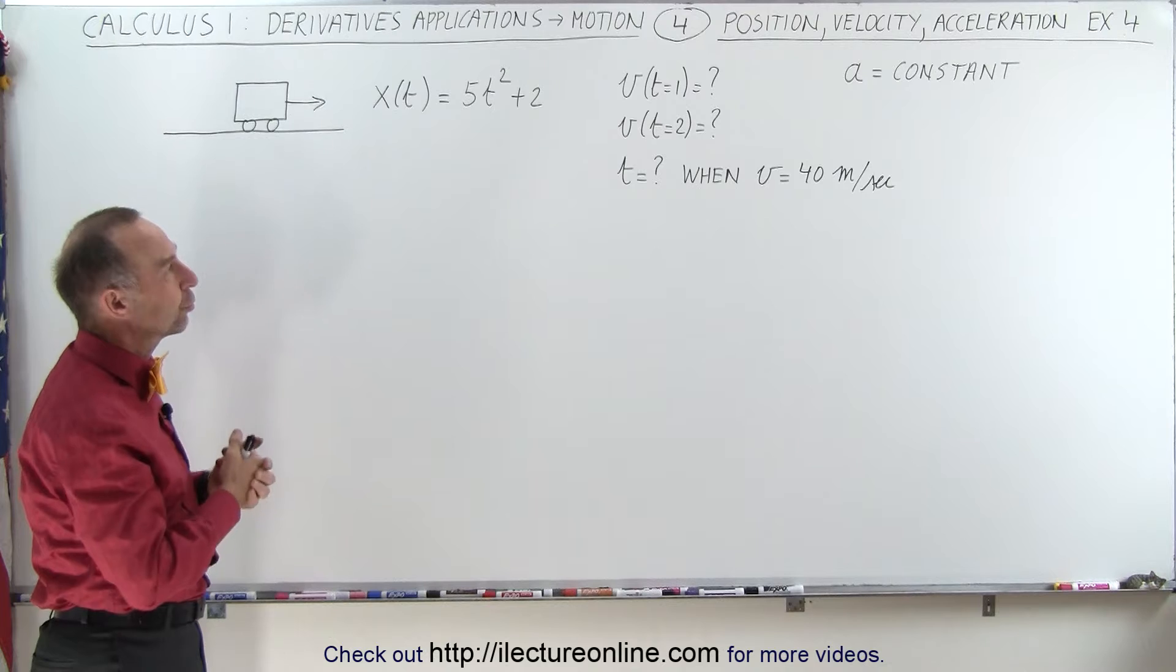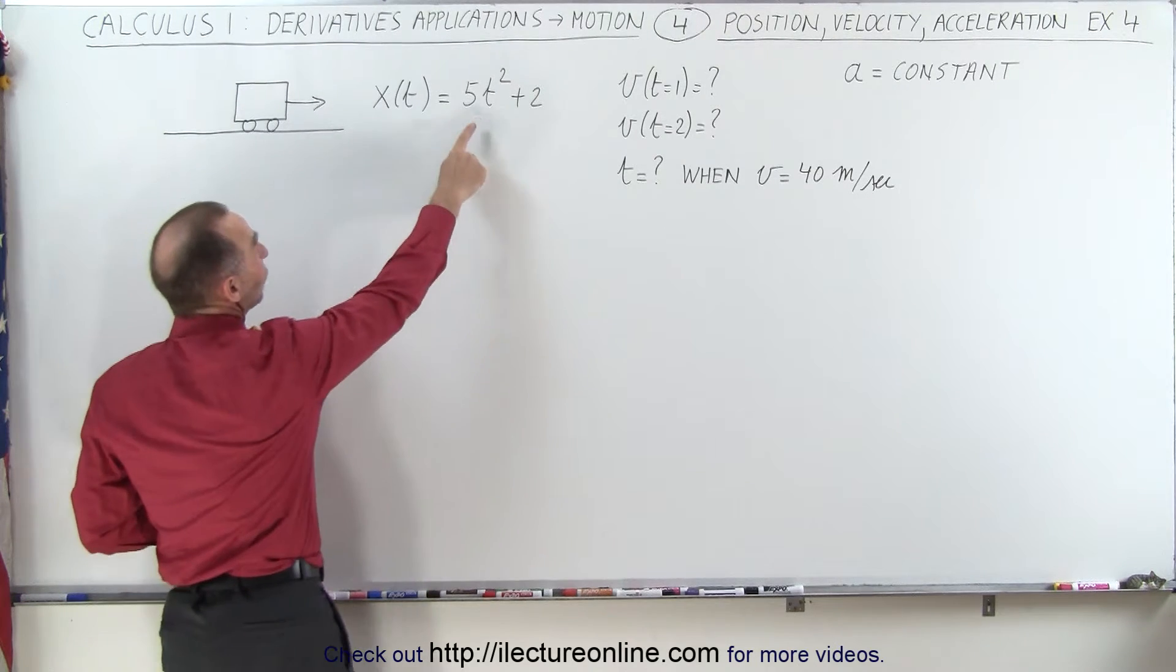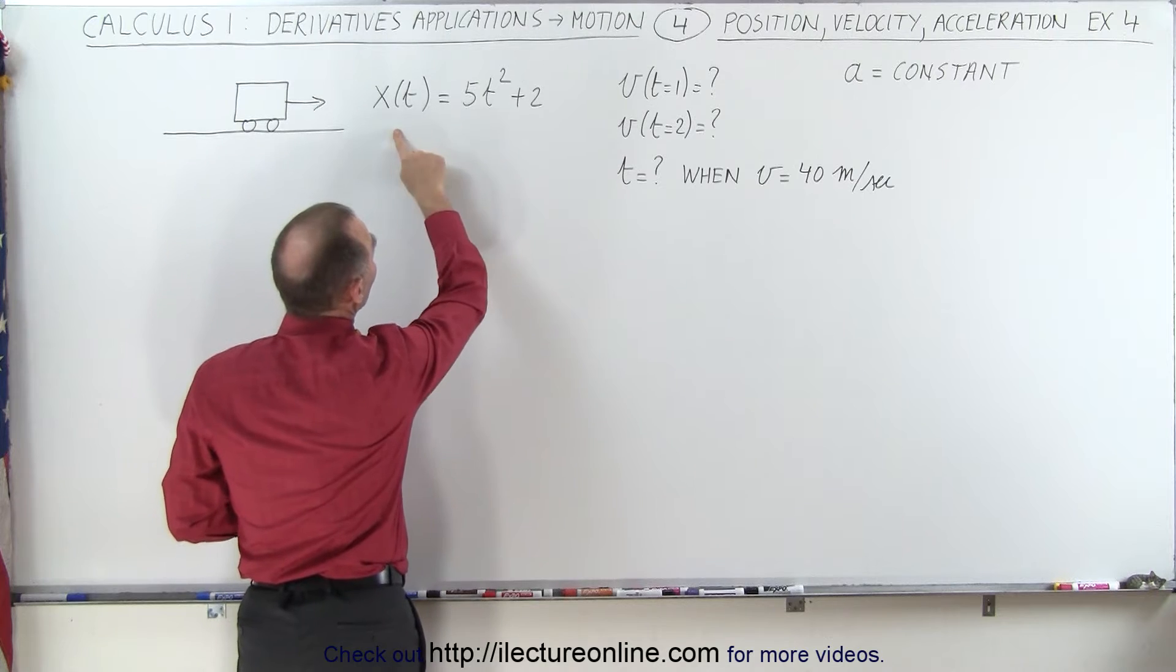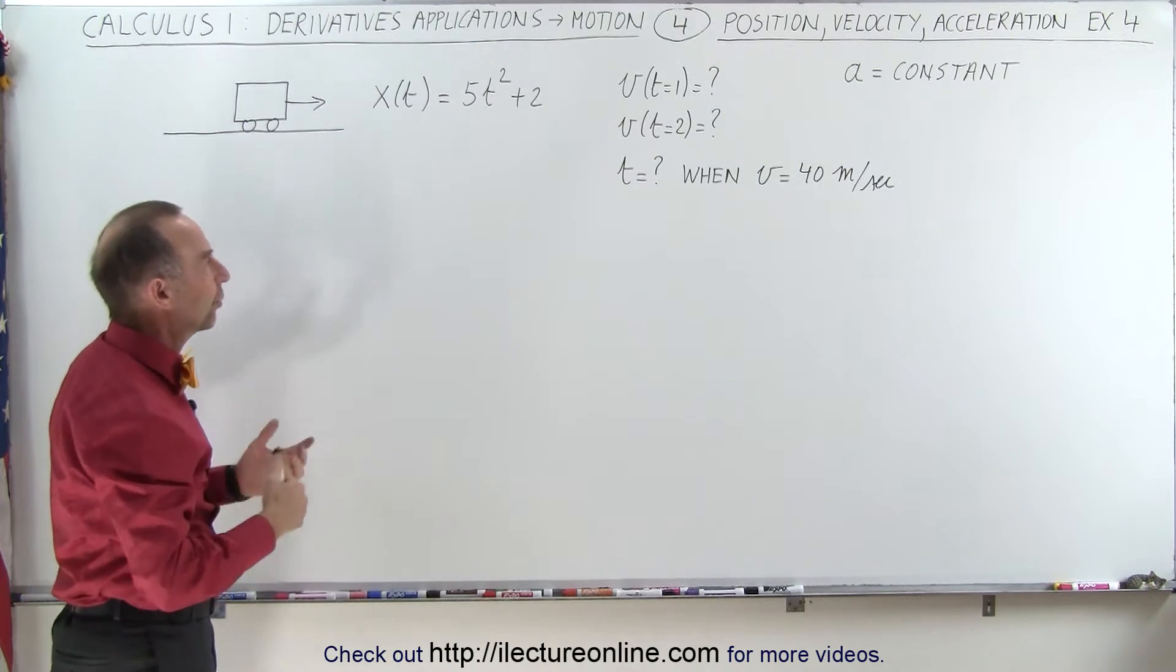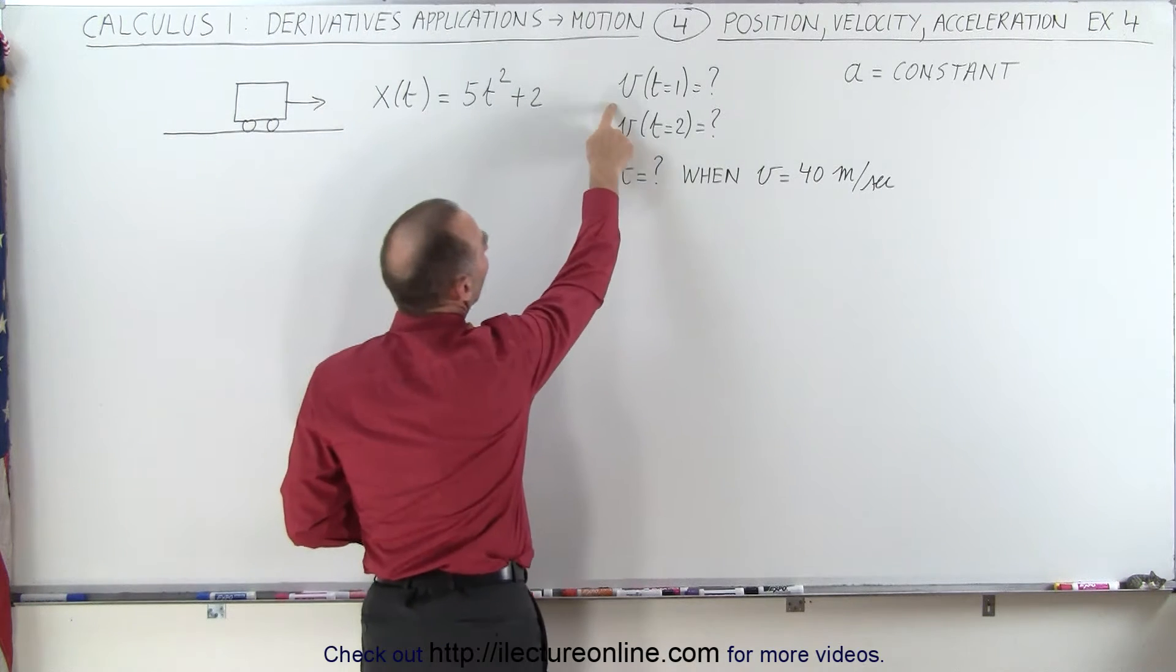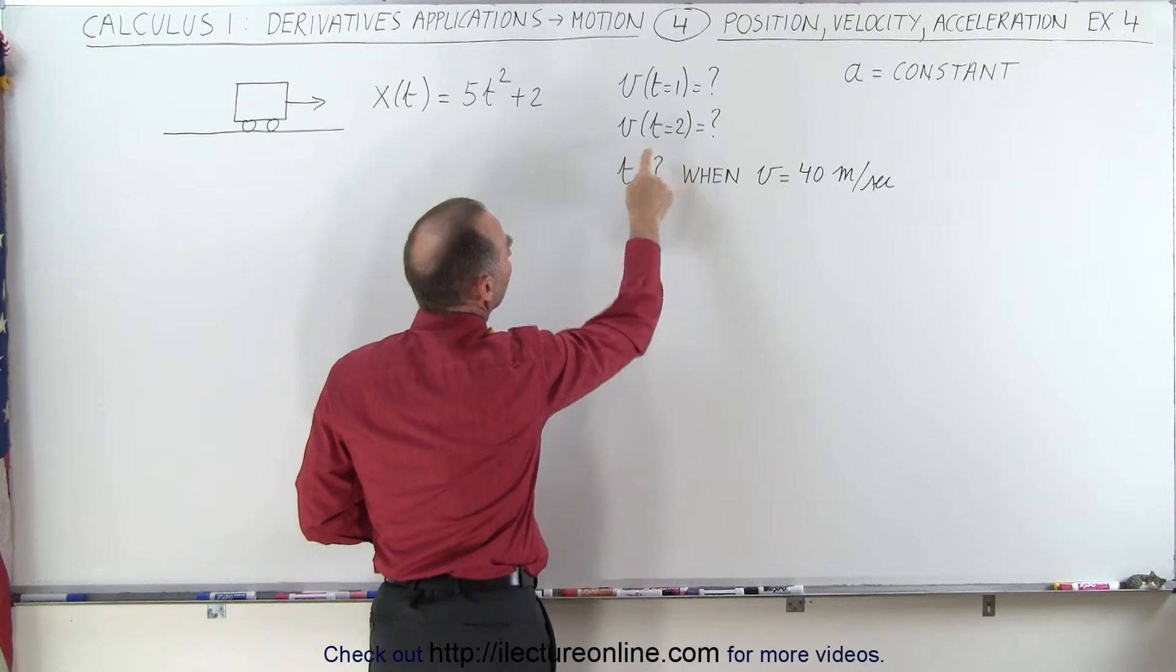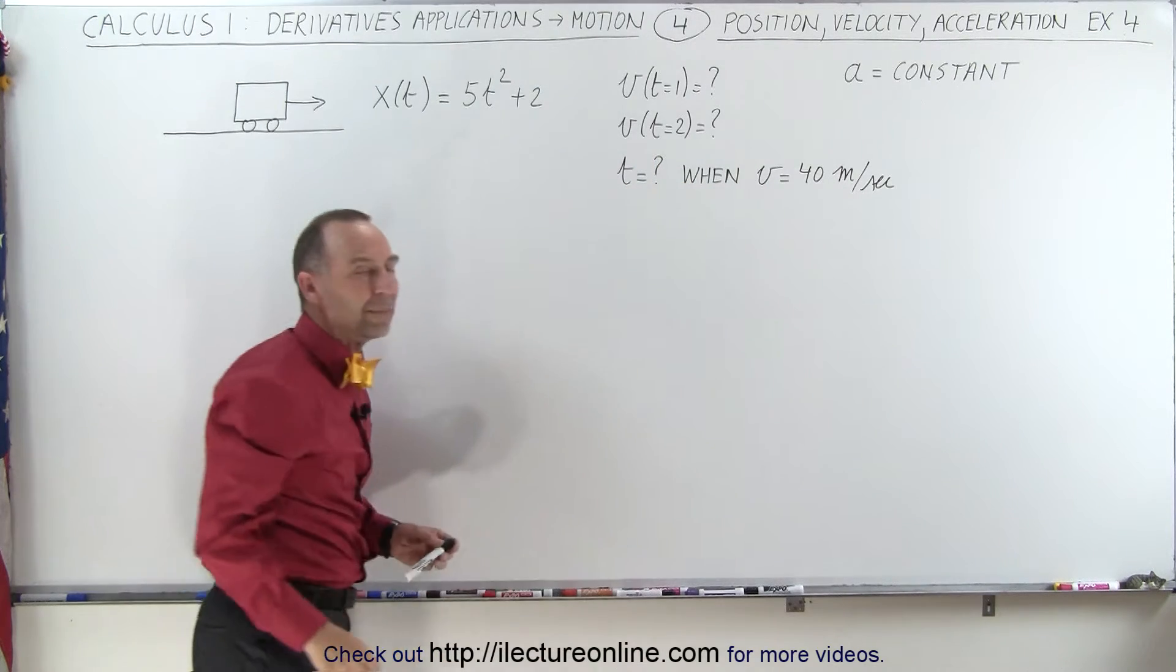In this example, we're going to show you where the acceleration is constant because the highest order term in the equation for position is second order. That usually signifies that the acceleration will be constant. We're going to find the velocity at t equal 1, the velocity at t equal 2, and how long it will take when velocity equals 40 meters per second.